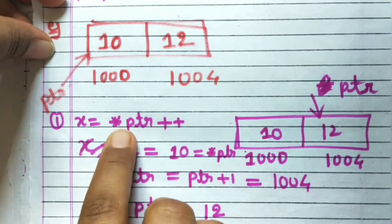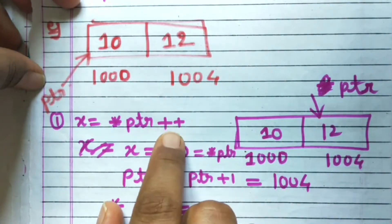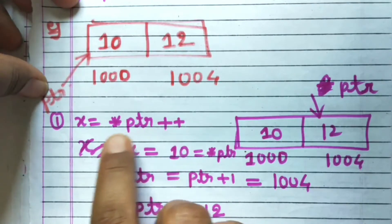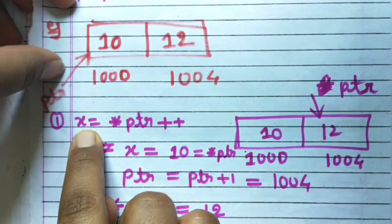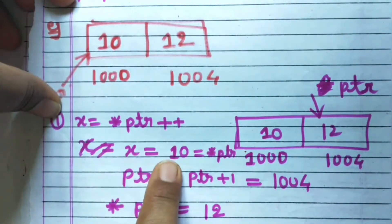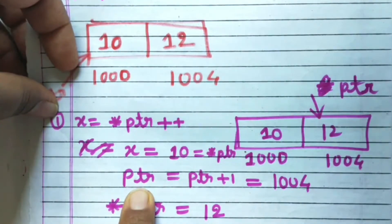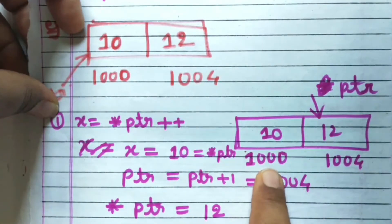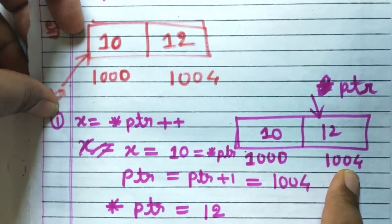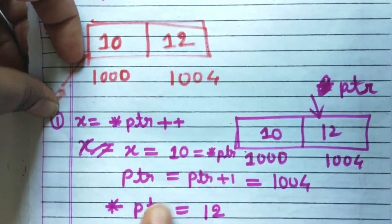First: x = *ptr++. Since this is a post-increment operation, the value pointed by PTR is first assigned to x. The value pointed by PTR is 10, so x = 10 (which equals *PTR). Then the address is incremented: PTR = PTR + 1, so address 1000 becomes 1004. PTR now points to 1004, and the value pointed by PTR becomes 12.